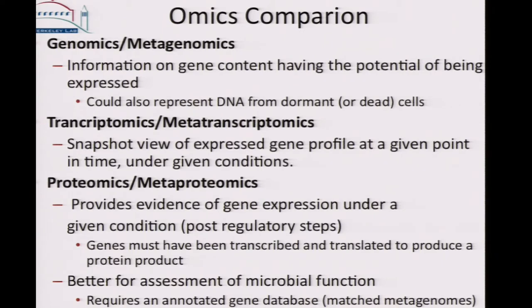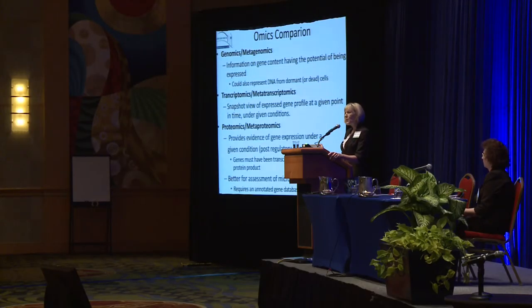If you look at the proteins — the metaproteome, or community proteins — that provides evidence that the protein has passed all of the regulatory steps at the RNA level and has also been translated. A caveat is that you don't always know if the protein is actually active when you detect it. However, the genes must have been transcribed and translated to produce the protein, and I would say that looking at proteins is better for assessment of microbial function. This does require an annotated gene database, so you do need the metagenome information as well, because otherwise it's not possible to identify what the proteins are.